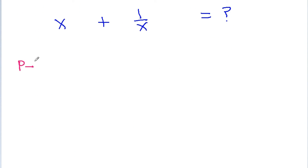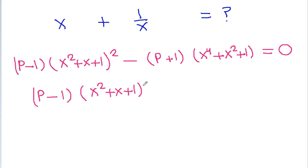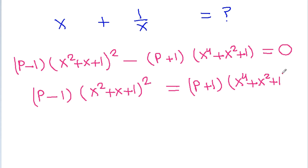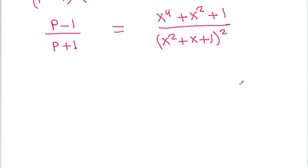The given equation is (p-1)(x² + x + 1)² minus (p+1)(x⁴ + x² + 1) = 0. Rearranging, we get (p-1)(x² + x + 1)² = (p+1)(x⁴ + x² + 1), which gives us (p-1)/(p+1) = (x⁴ + x² + 1) / (x² + x + 1)².